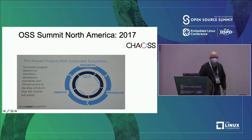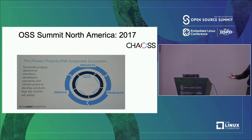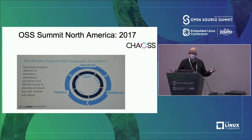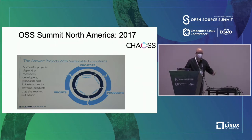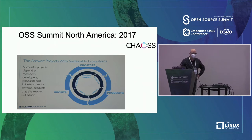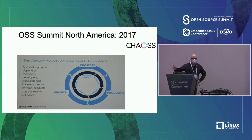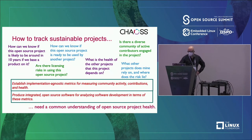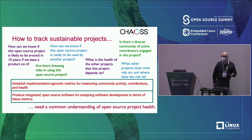Where CHAOSS comes in is measuring it. CHAOSS is a project that launched at the 2017 Open Source Summit in L.A. Our role is to define metrics for open-source software health and sustainability and provide tools that help open-source project organizations, OSPOs, individual projects, and ecosystems with ways to track the various components of sustainability within their projects.